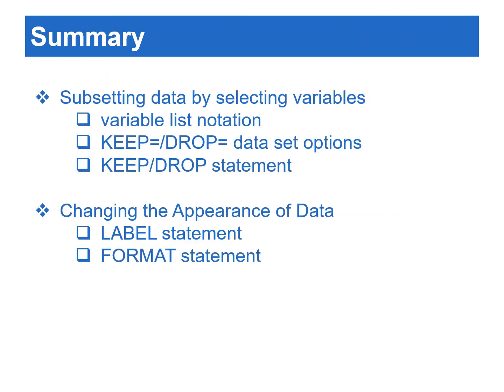Let's summarize what we've learned in this video. We learned how to subset data by selecting variables, and when selecting a list of variables, we can utilize SAS variable list notation such as numbered range, name range, name prefix, and special SAS name lists. To select variables, we can use KEEP=, DROP= data set options, or KEEP and DROP statements. Keep in mind that KEEP= and DROP= data set options can apply to both input and output data sets, while KEEP and DROP statements only apply to output data sets. We also learned how to label variable names using the LABEL statement and format variable values using the FORMAT statement. Using these in the data step adds attributes permanently, while using them in the proc step only changes the appearance of data temporarily.